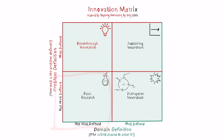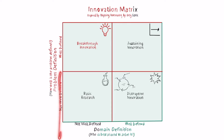When both problem and domain are not well defined, we are in what's called basic research. Basic research is everything that usually happens in academia or in labs — places where neither the domain nor the problem are well defined. It's very hard even to come up with technical specifications, and also very hard to know which skills are needed, because the field is new and is going to be developed in the long term.